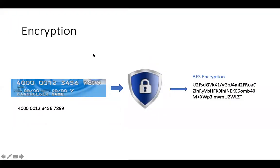Typically you'd have AES encryption or DES encryption. You take a number like a 16-digit credit card number and you get something on the right which is a lot longer — it's actually 65 characters. The input was 16 characters; we get a 65-character AES encrypted value.